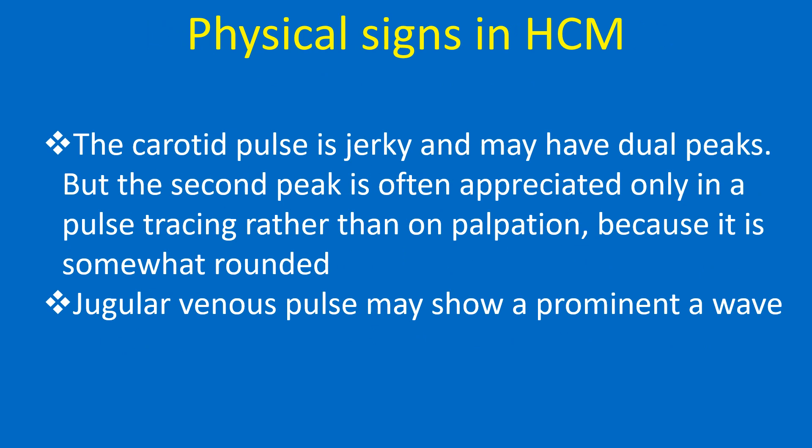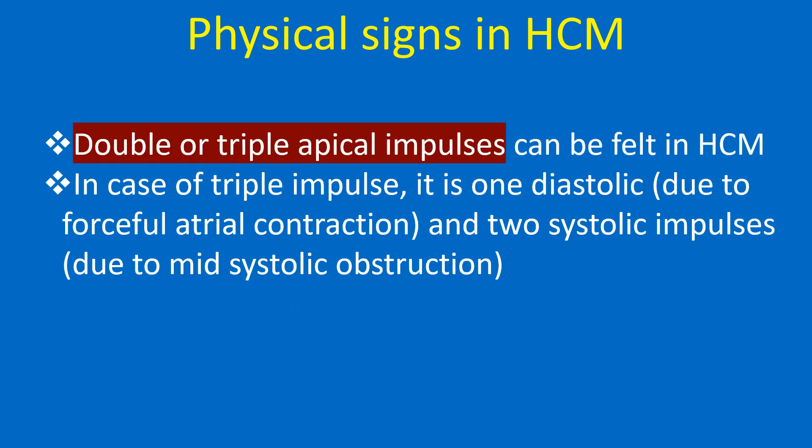Physical signs in HCM: The carotid pulse is jerky and may have dual peaks, but the second peak is often appreciated only in a pulse tracing rather than on palpation because it is somewhat rounded. Jugular venous pulse may show a prominent A wave. Double or triple apical impulses can be felt in HCM. In the case of triple impulse, it is one diastolic due to forceful atrial contraction and two systolic impulses due to mid-systolic obstruction.